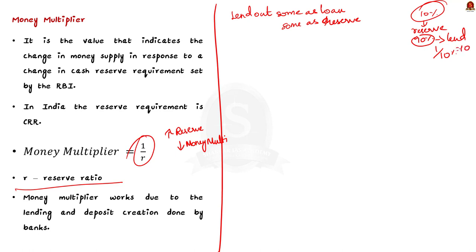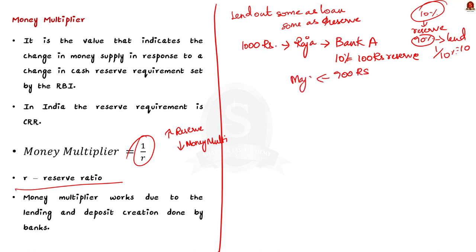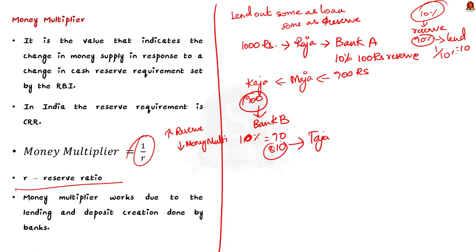Let's assume the RBI prints a 1000 rupee note and gives it to a person named Raja. Raja deposits the entire 1000 rupees in Bank A. Under the 10% reserve requirement, Bank A keeps 100 rupees as reserve and lends out 900 rupees. A borrower named Maja borrows the 900 rupees and buys a car from a person named Kaja. Kaja deposits the 900 rupees in Bank B, which keeps 90 rupees as reserve and lends out 810 rupees to another person named Taja, and the cycle continues.